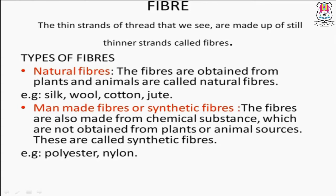You already learned in Class 6 about fiber to fabric. Let's recall: fiber — the thin strands of a thread that we see are made up of still thinner strands called fibers. Aapne thread dekha hai, thread ke aajubaju jo teen strands hota patale se, usko kya bolte hain hum log — fibers. Fiber has two types: first is natural fibers and second is man-made fibers or synthetic fibers.